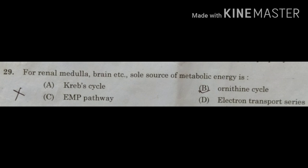The correct option for this question is option C: EMP pathway, also known as glycolysis. Glycolysis is known as the EMP pathway because its various steps were discovered by three scientists: Gustav Embden, Otto Meyerhof, and J. Parnas — and the first letters of their names give the pathway its name.